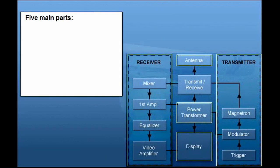This radar block diagram can be divided into five main parts. Antenna, with motor, gear, etc., which directs and transmits radio waves. Transmitter, with magnetron, modulator and trigger, which generate radar waves. Receiver, with mixer, amplifier, equalizer and video amplifier, which receive the reflected waves.